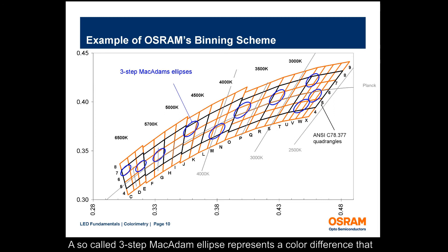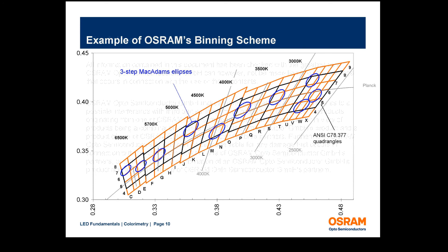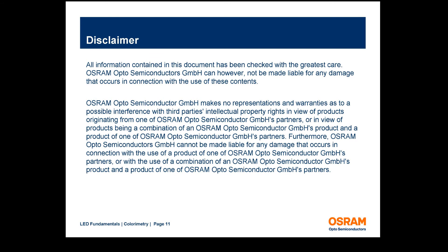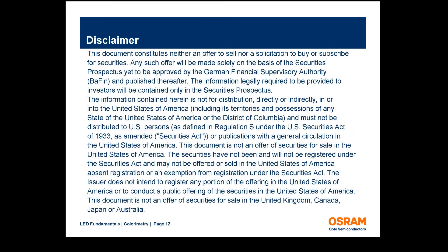A so-called three-step MacAdam ellipse represents a color difference that is just perceptible by the average person. Osram Opto Semiconductors offers a fine binning scheme for white LEDs based upon this three-step ellipse. Note that each bin is actually inside the three-step ellipse.